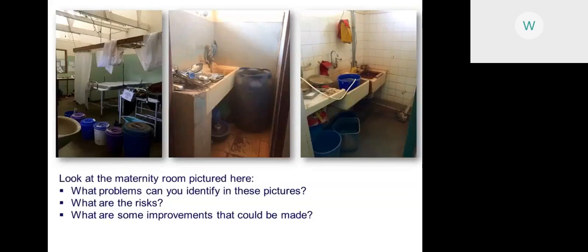Looking at a maternity room picture, there are a number of problems and risks to both patients and staff that could be identified. When we talk about improvements, we're not just talking about expensive infrastructure changes — we're also thinking about low-cost practical solutions that can be done immediately and have a big impact: general cleaning and tidying, minor repairs to leaking taps, cleaning the surrounding environment — things that don't need to cost a lot of money but can still have a big impact.